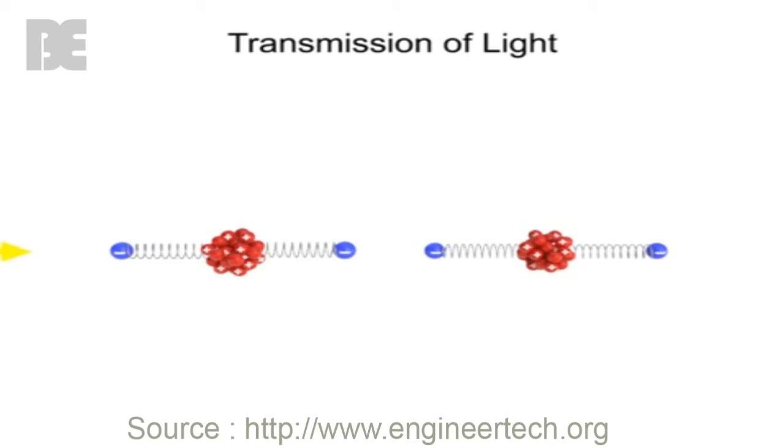When light impinges upon the atoms of a material, its energy is absorbed. This absorption of energy causes the electrons within the atoms to undergo subtle temporary vibrations.